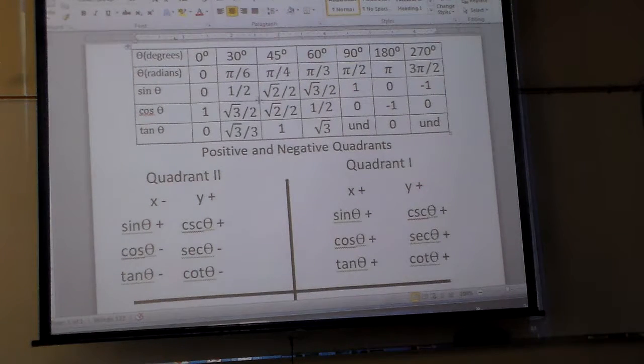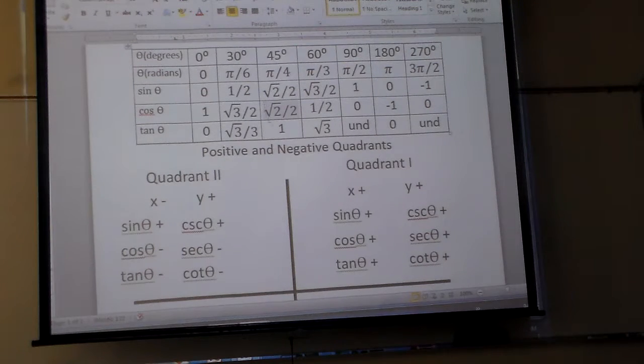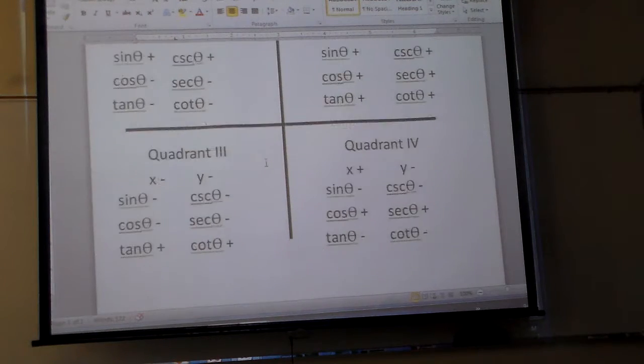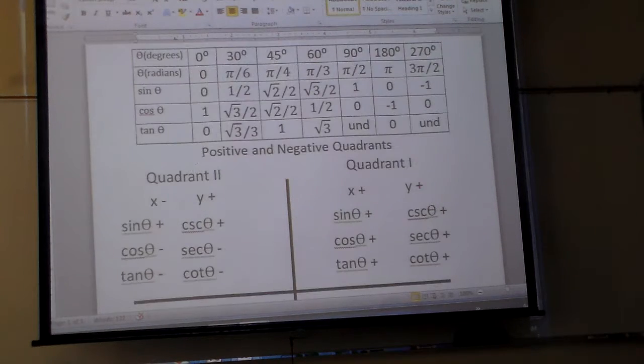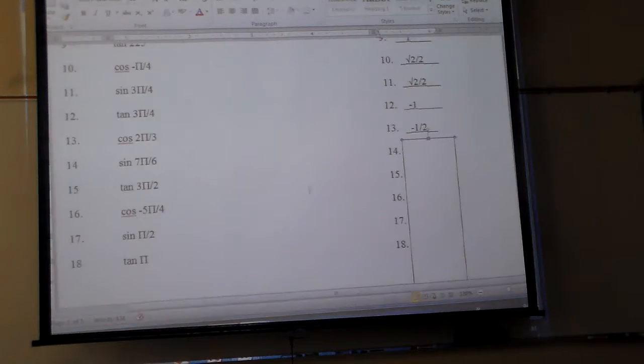But 7π over 6. Now 7 is bigger than 6. So I know it's in quadrant 3 or 4. Is it in quadrant 3 or 4? 7π over 6. 3. And what is sine in quadrant 3? Negative. So our answer is negative 1 half. Oops. Got to get the right thing there. Sine 7π over 6 should be negative 1 half. Woo-hoo!